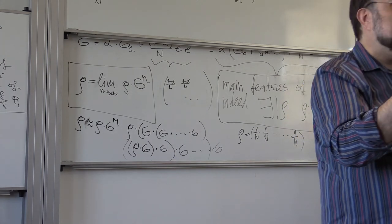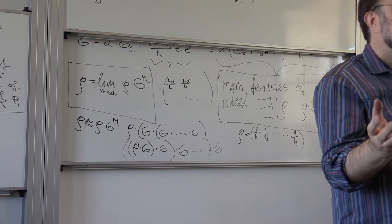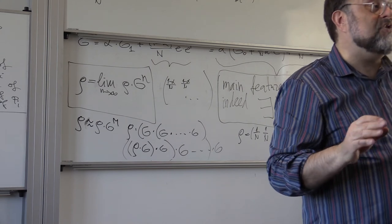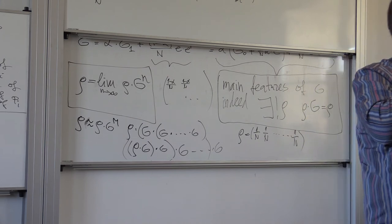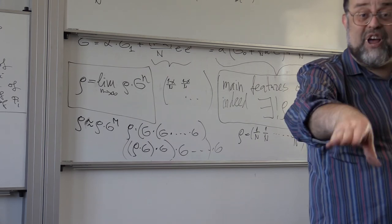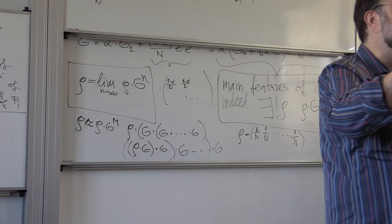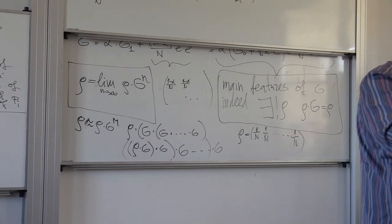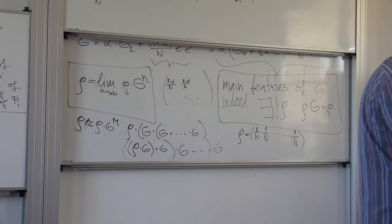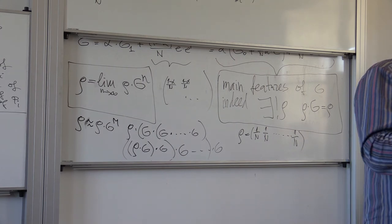It turns out that because the link structure is so rich, in fact, a small number of jumps, of only 5 or 6 jumps, is enough to reveal the structure of the web.